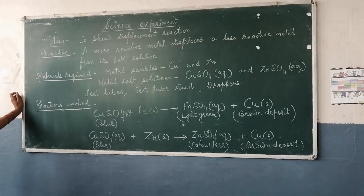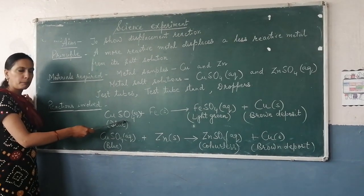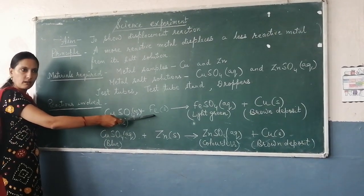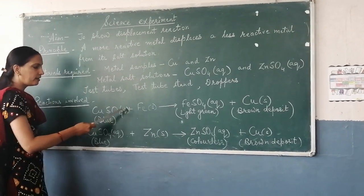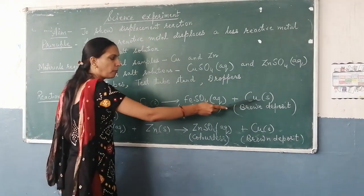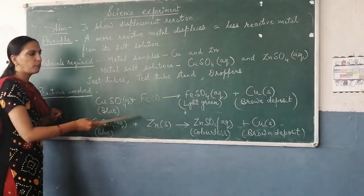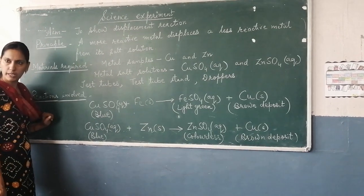We will do two displacement reactions here. First, we will take copper sulfate solution plus some iron nails. We will see that iron displaces copper from there, and copper is separated from the iron sulfate solution. We will see that the color will change from blue to light green.